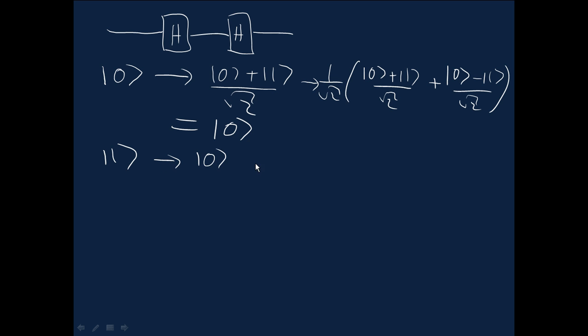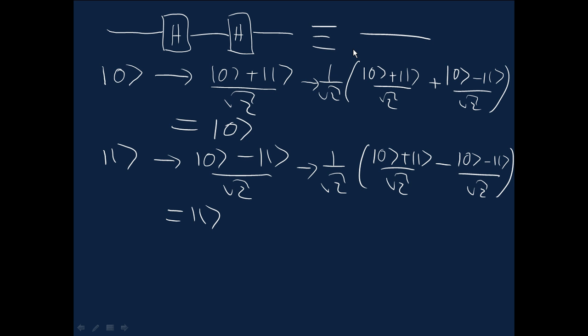And the one state is taken to (|0⟩ - |1⟩)/√2 by the first gate, and then to 1/√2[(|0⟩ + |1⟩)/√2 - (|0⟩ - |1⟩)/√2]. So now the zero terms cancel with each other and the plus one terms reinforce, we've got a double minus here, and we end up with the one state as the output. So in fact this quantum circuit is also equivalent to the quantum wire.